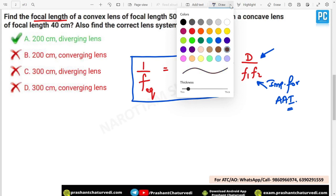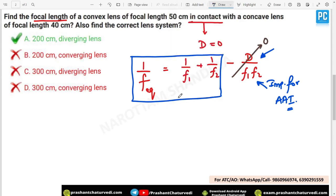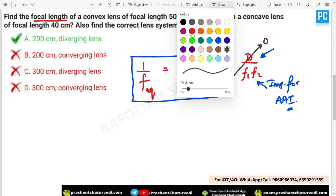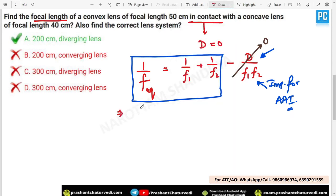Right now, why we are not including? Because both the lenses are in contact. That is why this particular term will be directly equal to 0. And now, while calculating 1 upon f equivalent, what we will be doing? Convex lens. For convex lens, we consider our focus. We had used the sign convention. For convex lens, the focus will be positive. So 1 upon 50 centimeter plus 1 upon, this is concave lens. It is having focal length of 40 centimeter. This is a diverging lens. That is why we consider it as minus 40. According to our sign convention, the focus of concave lens is taken as negative.